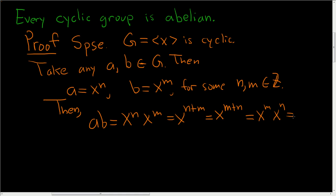But wait a minute, x to the m, that's b, and x to the n, that's a, so we show that ab is equal to ba. Thus G is indeed an abelian group. And that completes the proof, it's very nice, almost immediate.